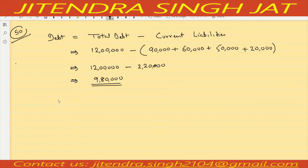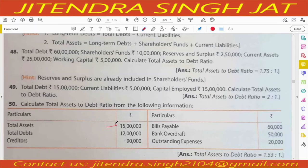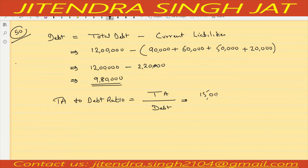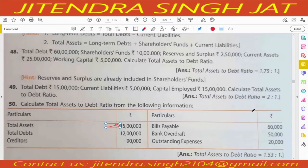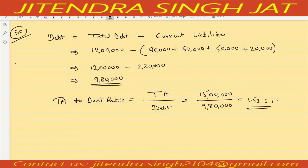Total asset is already given in the question. So total assets to debt ratio equals total assets upon debt: total assets are 15 lakh, debt we computed is 9 lakh 80,000. Dividing 15 lakh by 9 lakh 80,000 gives 1.53 is to 1. I hope it is clear to everyone.